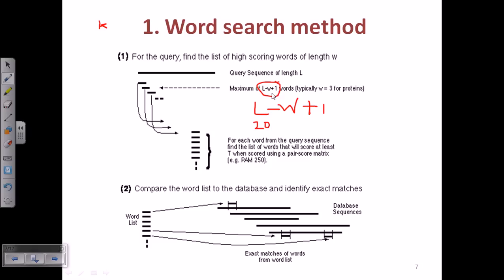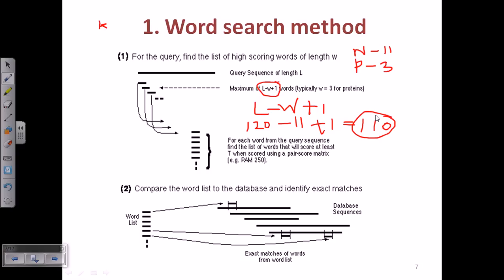W is the word limit — for nucleotides the word limit is 11, and for proteins it is 3. So if the length of the nucleotide sequence is 120 base pairs, we subtract 11 and add 1: 120 minus 11 plus 1 equals 110. So 110 query words will be generated if the query sequence is 120 nucleotides long.